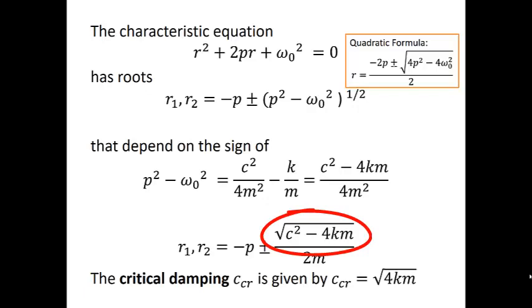Critical damping will be given when C is equal to the square root of 4KM. From here we want to study the three possible cases that can arise, all depending upon what's happening under that square root.